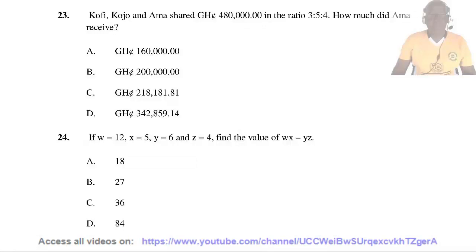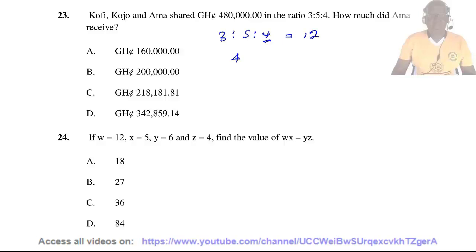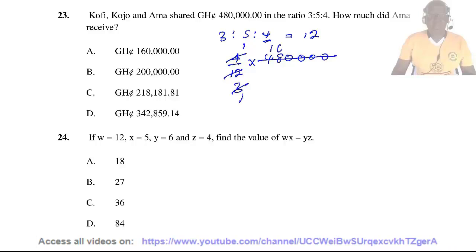Question 23. Kufi, Kweju and Amma shared 480,000 Ghana cedis in a ratio of 3:5:4. How much did Amma receive? The ratio is 3:5:4. Amma's ratio is 4, and the total ratio is 12. So Amma's share is 4 divided by 12 times 480,000, which equals 160,000. The right answer is A.